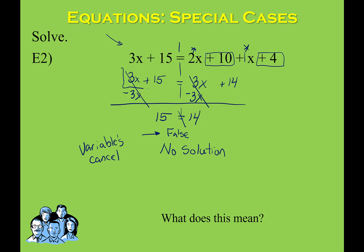As with the previous example, we could have stopped earlier, because 3x plus 15 will never equal 3x plus 14. The 3x terms will always be the same amount regardless of what you substitute in for x, but on the left side you're adding 15 and on the right side you're only adding 14, so those won't be the same. You can stop early if you recognize the answer is going to be no solution.